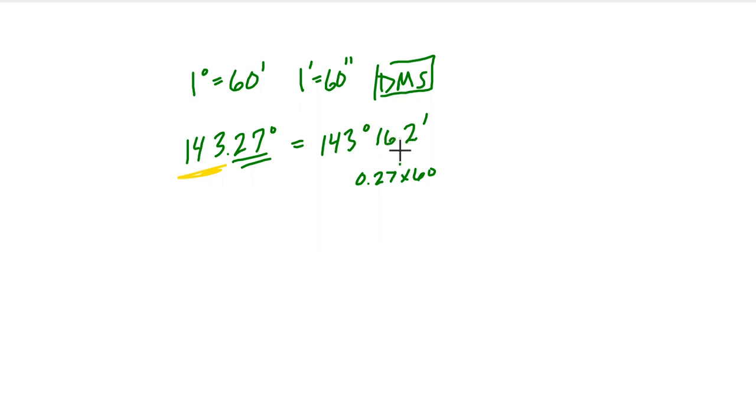What's different here is that we have a decimal piece, this 0.2. And what we could do is break that down into seconds. So we have 143 degrees, 16 whole minutes in that remainder of a degree. And then this is a 0.2. So it's 0.2 times 60 again, because there are 60 seconds in each minute. And if we do that calculation, we get 12. 1 tenth of 60 is 6, 2 tenths is 12. And that's our final answer.